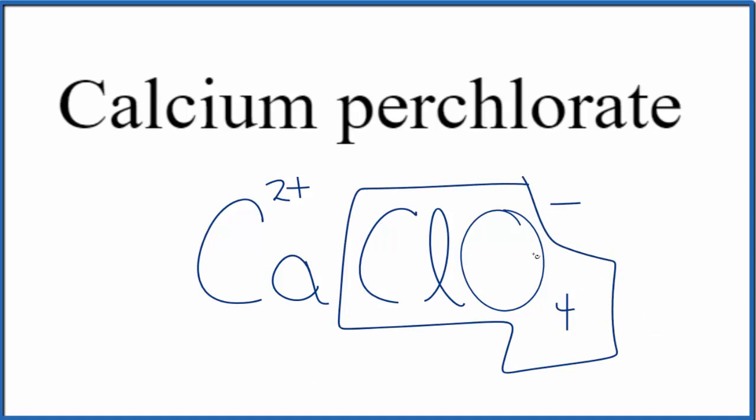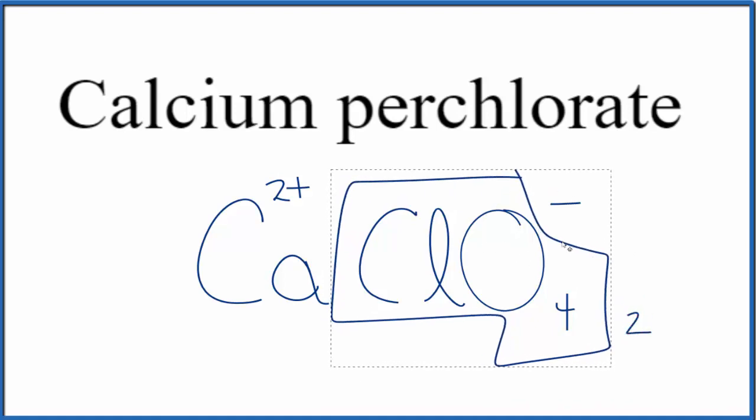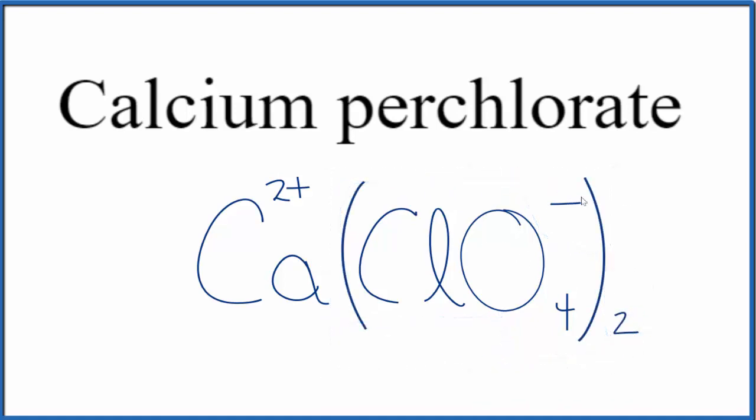For the charge to balance, we're going to need two of these perchlorate ions. Let's replace this with parentheses. Now we have two times one minus, that's two minus, that balances out the two plus.